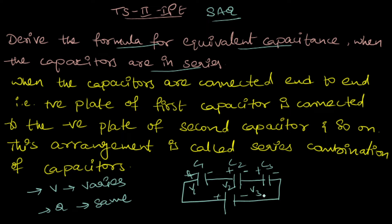This combination of capacitors is known as a series combination. In the series connection, capacitors are connected end to end, and finally the first terminal and the last terminal are connected to the battery.